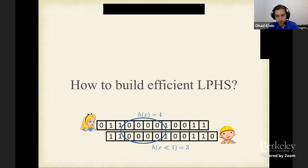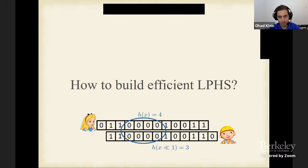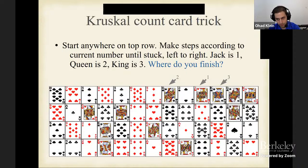One solution is the Statue of Liberty approach: read d bits from the input and find the most special substring — for example, the largest streak of zeros — and output that location. This is a valid LPHS, but we want better.